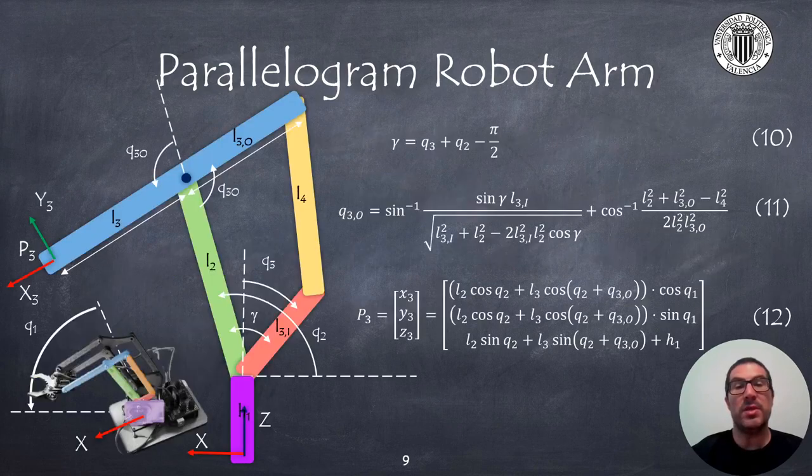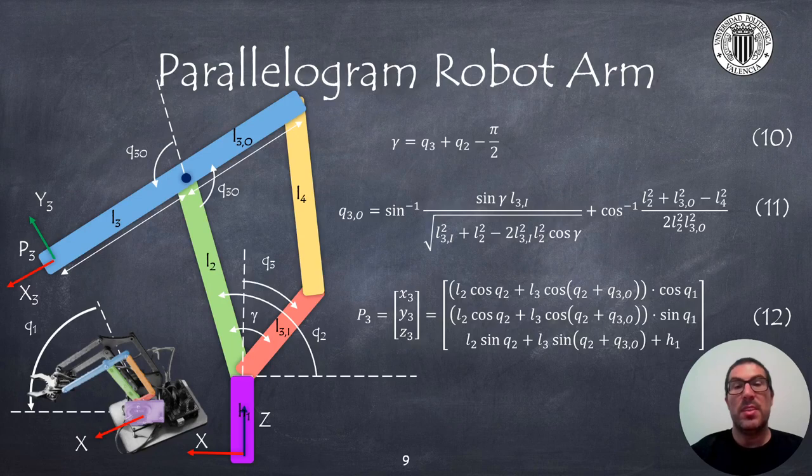So, if we now take into account that the green bar is not fixed, it's the actual link 2 of the robot that depends on Q2, then we have that the gamma angle is actually a combination of the angles Q2 and Q3. The exact formula will highly depend on how motors are assembled, since manufacturers will indicate the zero position of each joint and its positive direction of rotation.